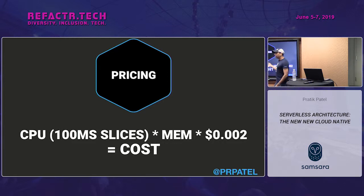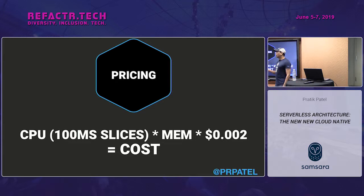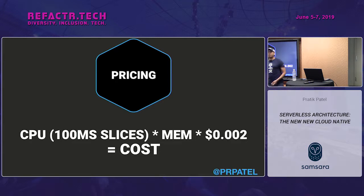We look at on-demand computing with something like serverless versus reserved computing, where you say you need an AWS mid-size instance to run your Node or Python application. Of course you want high availability, so that $250 a month is actually $250 times two, because you want two servers running in case one goes down. That's how Amazon and other cloud providers make so much money — you're spending all this money on infrastructure and paying for it all the time.